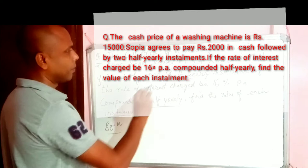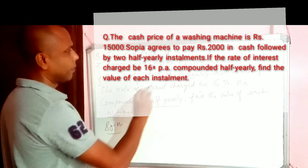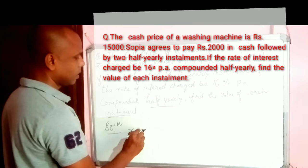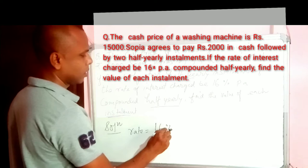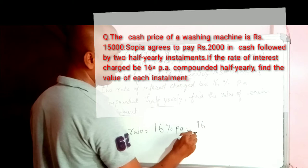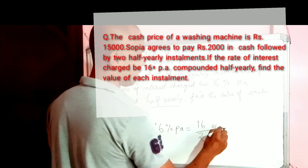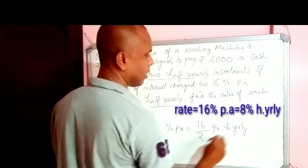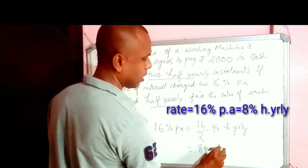We have here rate 16% per annum. So half yearly will be divided by 2 half yearly. So this will be 8% half yearly.